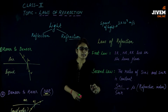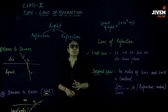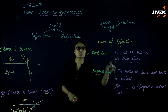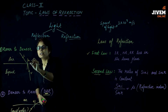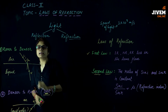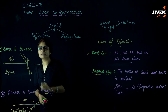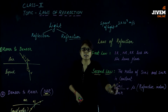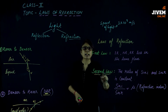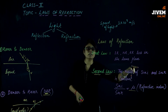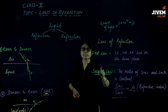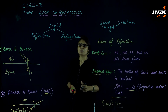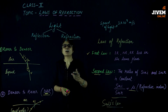For the second law of refraction: the ratio of sin I and sin R is always constant. Here, I is the angle of incidence — the angle formed by the incident ray with the normal — and R is the angle of refraction — the angle formed by the refracted ray with the normal. So sin I upon sin R is always constant, and that constant is represented by mu (μ), which is also called the refractive index. This law is also called Snell's law, which we will study in detail in our next topic.